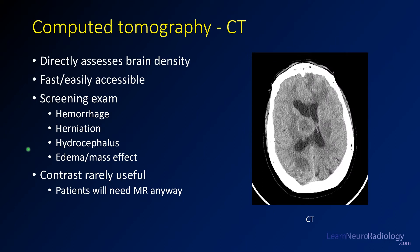CT is the mainstay of screening for intracranial infection. It directly assesses the density of the brain, it's fast, and it's easily accessible at the vast majority of hospitals. You don't need a sedated or very still patient to do the exam. It's a screening exam to look for hemorrhage, herniation, hydrocephalus, edema, and mass effect. As you can see in this CT, this is clearly abnormal — there's a mass and a bunch of abnormal areas. Contrast is rarely going to be useful on CT simply because most patients will go on to need MRI anyway.